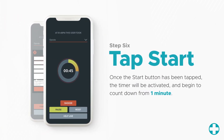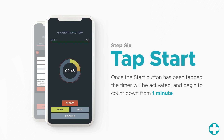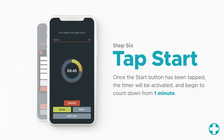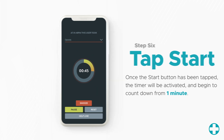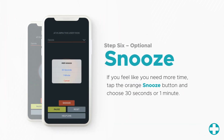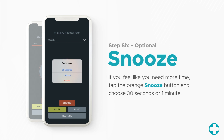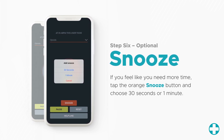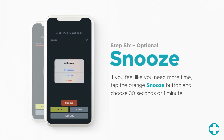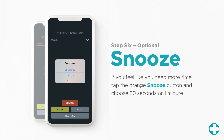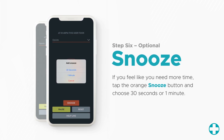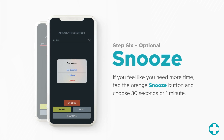Once the start button has been tapped, the timer will be activated and begin to count down from one minute. While the timer is active, if you feel like you need more time, simply tap the orange snooze button and choose either 30 seconds or one minute. Keep in mind that you can only snooze the timer once per session.